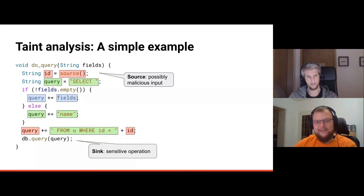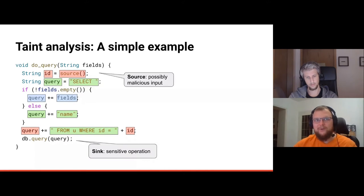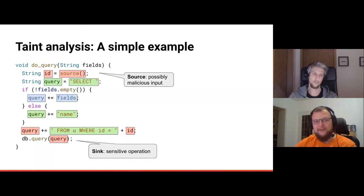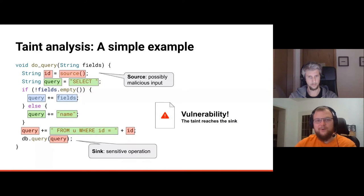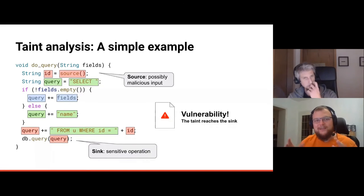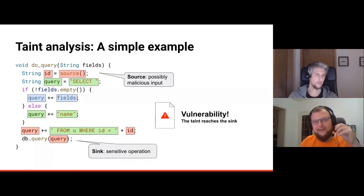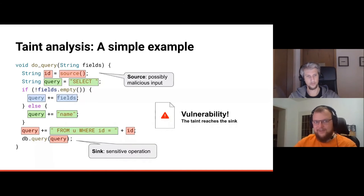At the end of the control flow, if the tainted query variable reaches a sink — a sensitive operation like a database call — then an attacker can control that input, and we declare a vulnerability. The principle is: detect any path where attacker-controlled input flows into a sensitive operation.